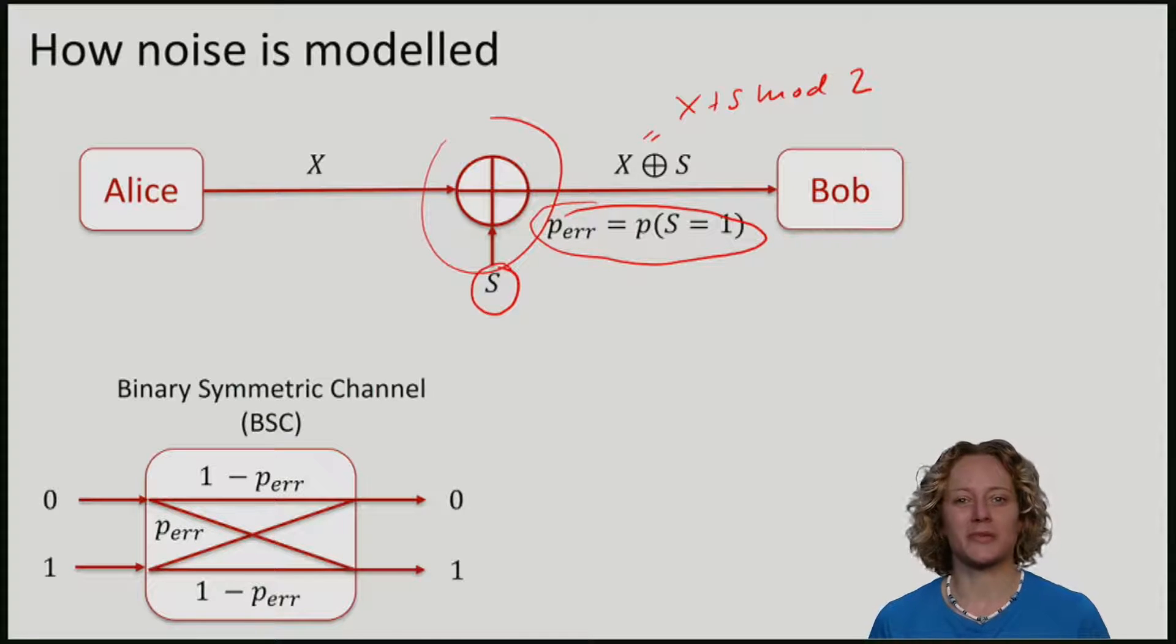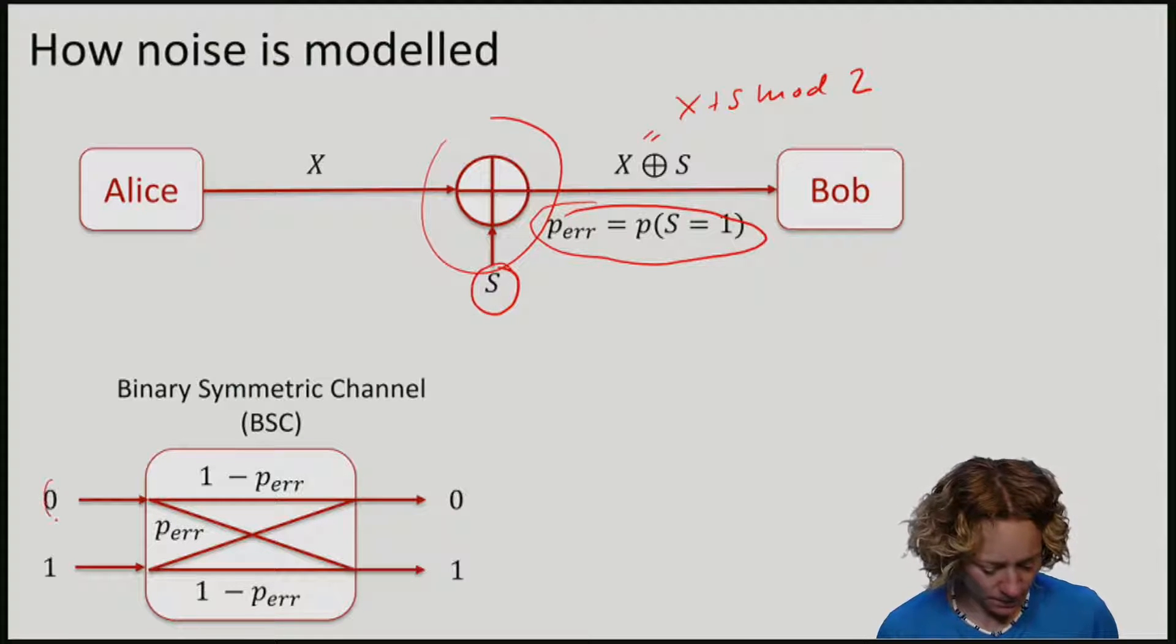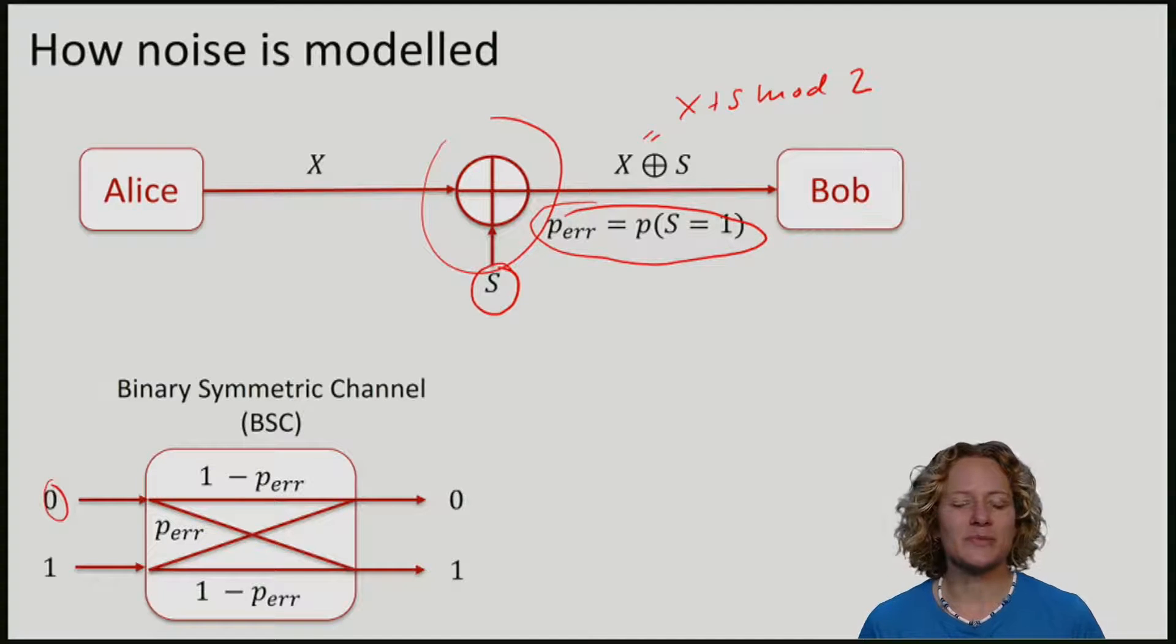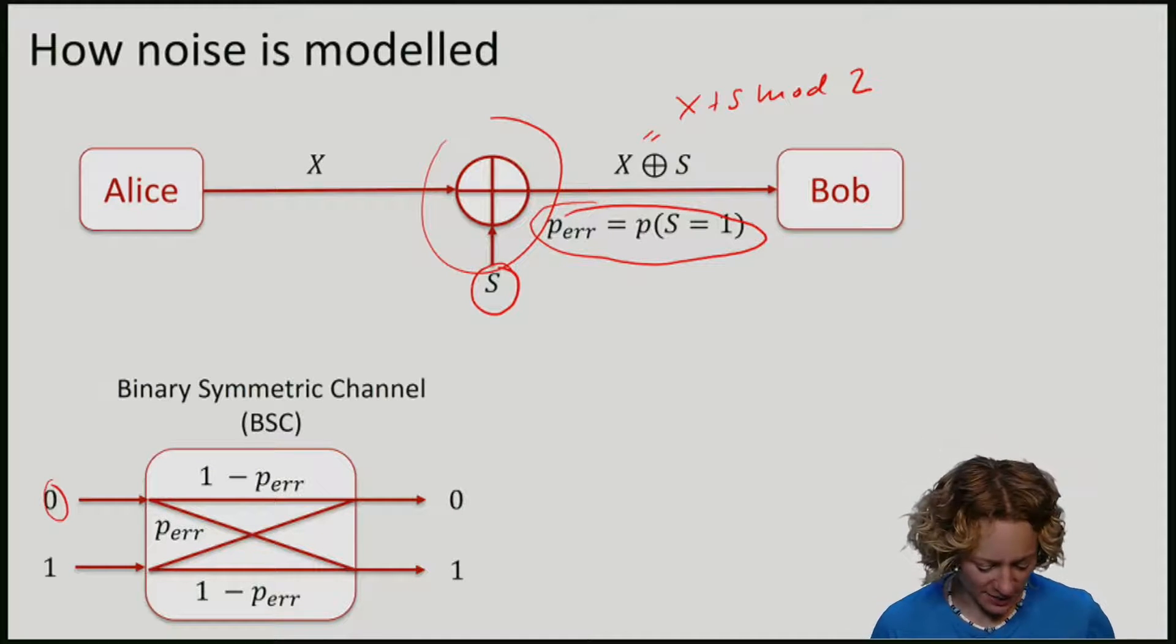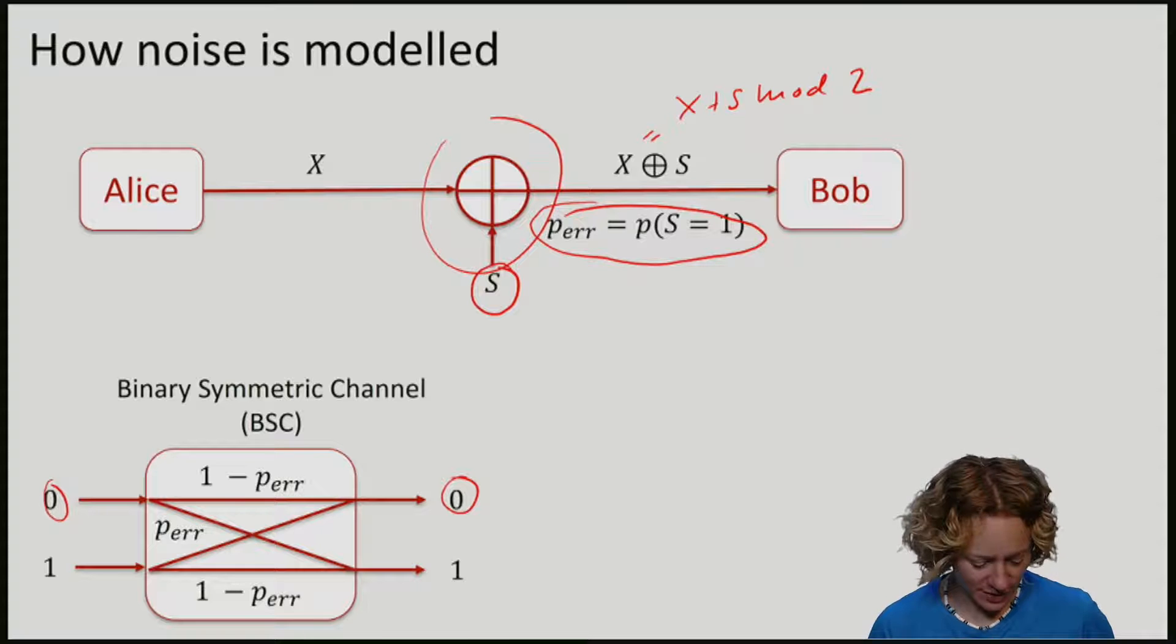One way to think about what XORing with the bit s does is that if the initial input bit x is 0, then with the probability 1 minus p_error, we will stay 0. If the input is 1, with the probability 1 minus p_error, it will stay 1.